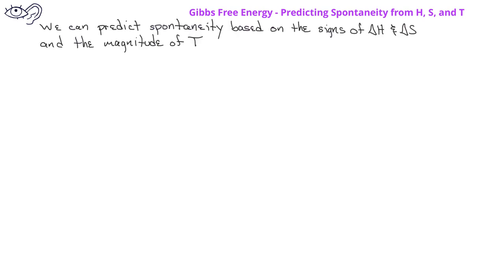Because ΔH, ΔS, and the Kelvin temperature T are used in calculating the value of the free energy change, we can make predictions about the spontaneity of a reaction if we know the signs of the enthalpy change and entropy change, and also know the relative magnitude of the Kelvin temperature.